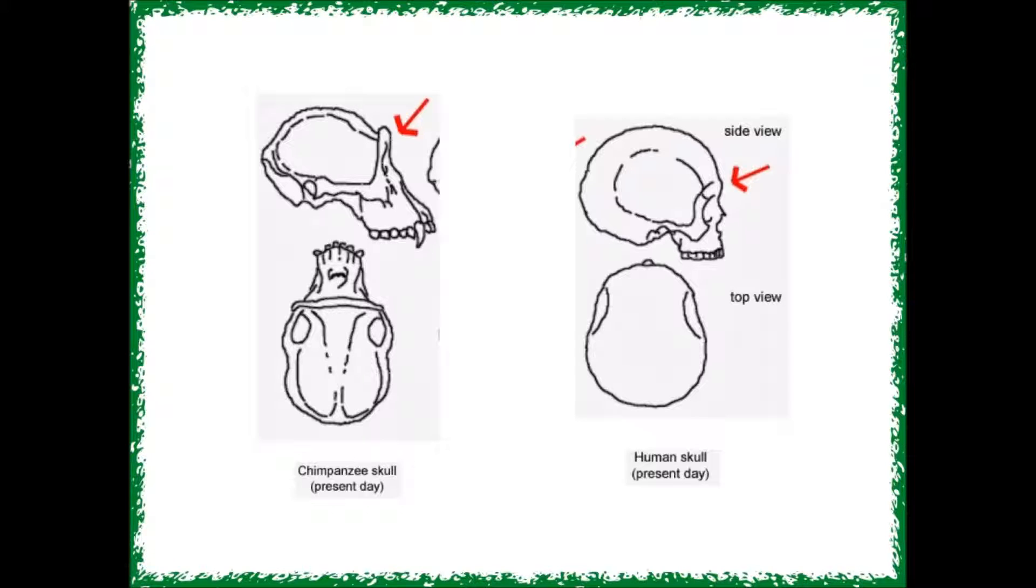This larger front part of the brain, called the prefrontal cortex, allowed us to get smarter and to begin to learn how to speak and to plan for the future.